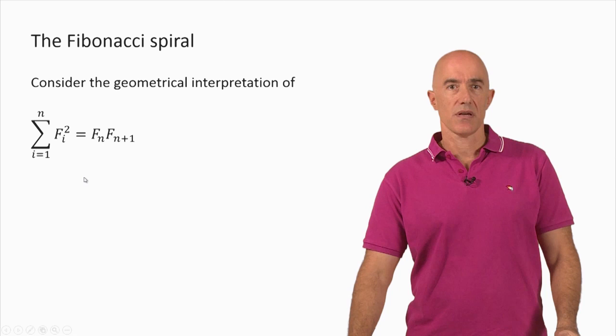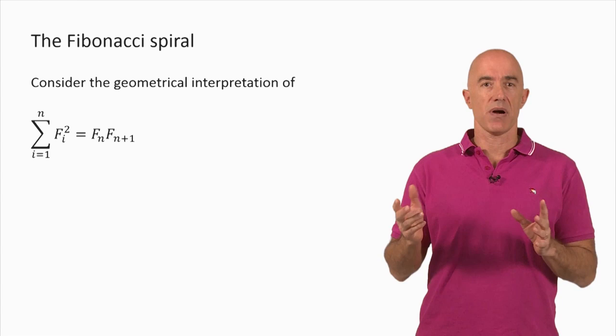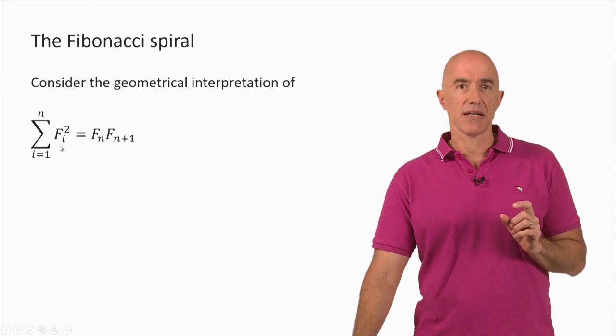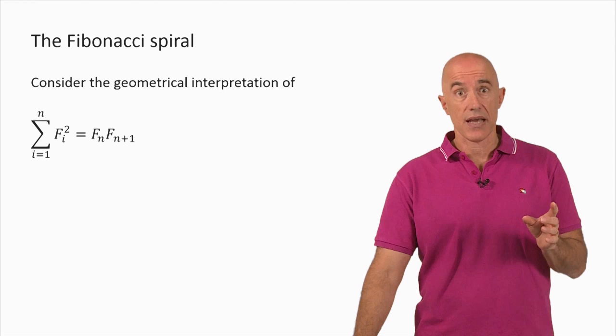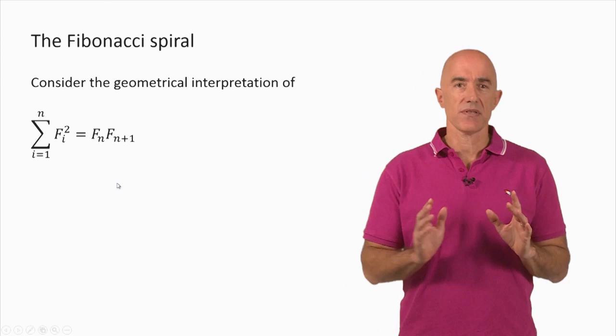The left-hand side is a sum of squares. We can interpret squares as the area of a square — the square of a number is the area of a square with the side given by that number. So we can interpret the left-hand side as n squares, each with side length given by a Fibonacci number and area given by that Fibonacci number squared. We can interpret the right-hand side as the area of a rectangle with side lengths F sub n and F sub n+1.